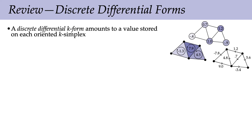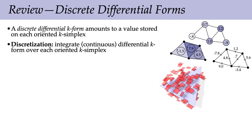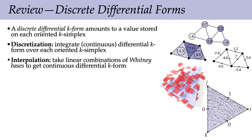If we have a zero-form, we store a number at each zero-dimensional simplex, the vertices of the mesh. A discrete one-form stores something on each edge, a two-form on each triangle, and so forth. We can imagine these values came from integrating a continuous differential form over each oriented k-simplex. Going the other direction, if we have a value per oriented k-simplex, we can interpolate a continuous differential k-form using the Whitney basis.